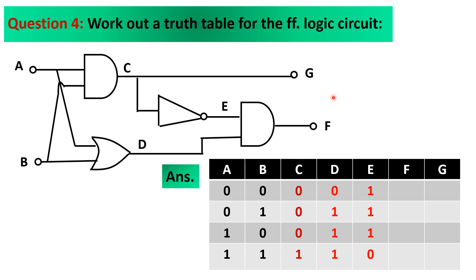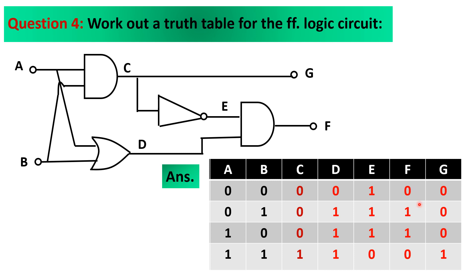The next thing is outputs G and F. Output G is the same as output C — whatever you have for output C will be the same for output G. For output F, you combine output E with input D through the AND gate: 0 AND 1 is 0; 1 AND 1 is 1; 1 AND 1 is 1; 0 AND 1 is 0. So for G: 0, 0, 0, 1, matching column C. Everything has been checked and we have answered question number 4.